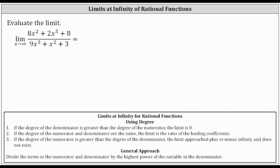Let's begin by determining the degree of the numerator and denominator. Notice the degree of the numerator is five — the highest power on x — and the degree of the denominator is three, again the highest power on x. The degree of the numerator is greater than the degree of the denominator.